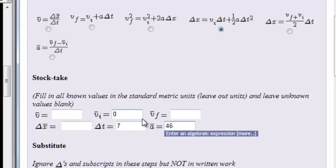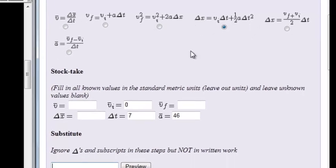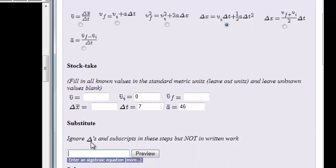We are going to leave out units in this substitution step. Okay, but next up is the substitution step right here. All I'm going to do is take this exact formula and substitute in there, ignoring deltas and any subscripts like the I for initial velocity.